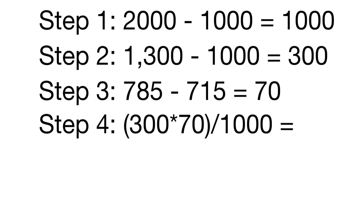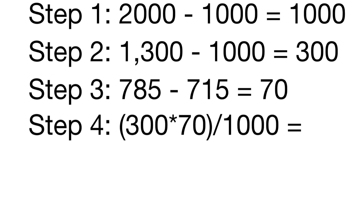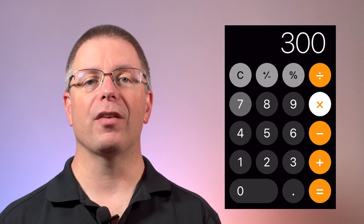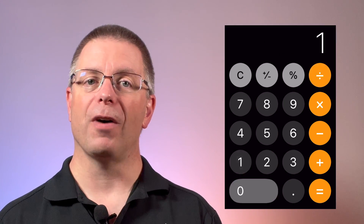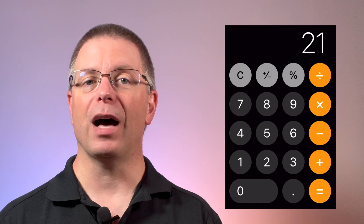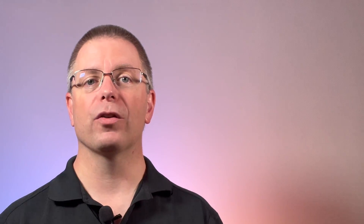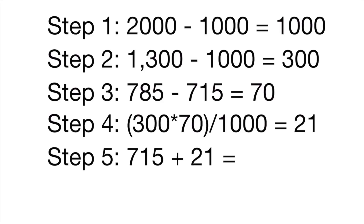Fourth, putting the numbers in the equation gives us 300 times 70 divided by 1,000. Using our calculator, 300 times 70 equals 21,000. Dividing that by 1,000 equals 21. Since the reference values go from low to high, we'll add 21 to the first one, so 715 plus 21 leaves an estimated ground roll of 736 feet.